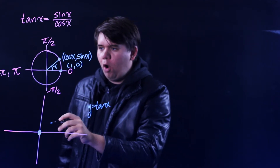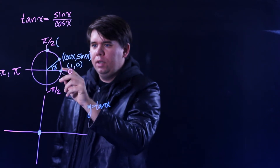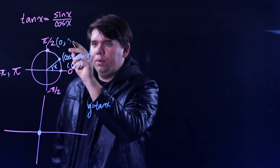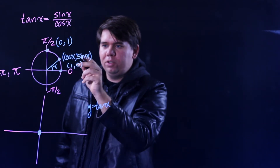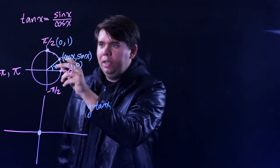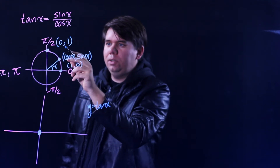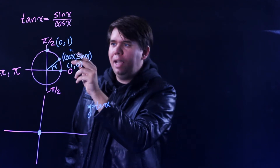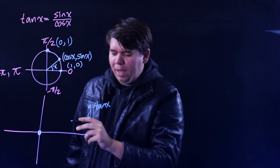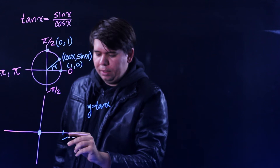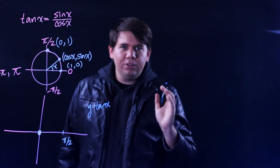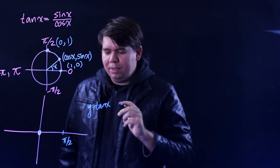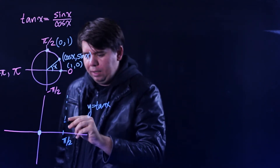If we go all the way up to the top of the unit circle, at angle π/2, the x value is zero and the y value is one. So cosine is zero and sine is one, giving us one divided by zero. Tangent at π/2 is one divided by zero, and we don't want to divide by zero, so it's undefined.